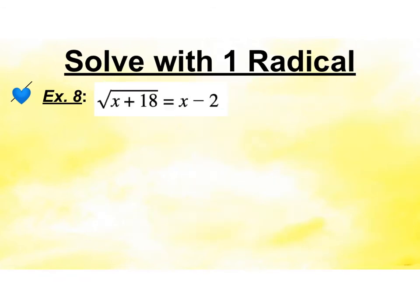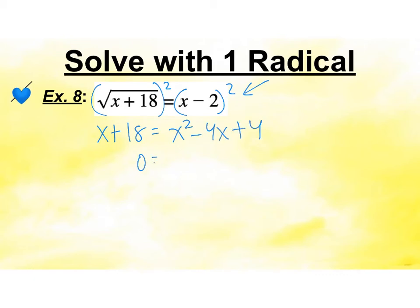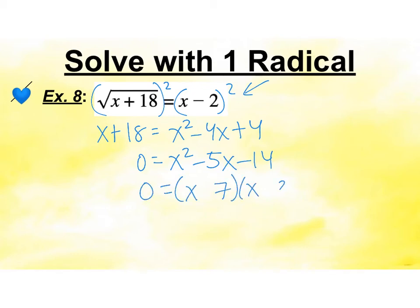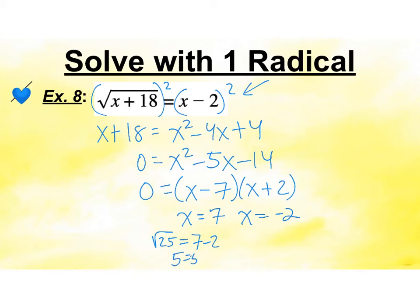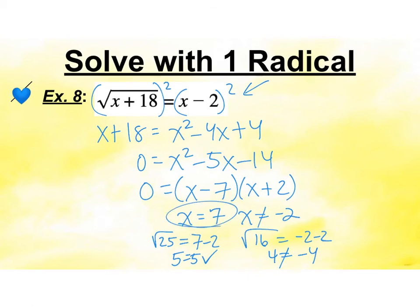Solve with one radical. We're going to square both sides. Remember the right side is a binomial so we have to square it correctly, not just the pieces. So I get x plus 18 equals x squared minus 4x plus 4. Set it to 0 — it is a quadratic. Factor it to (x - 7)(x + 2). So x equals 7, x equals negative 2. Plugging back in: square root of 25 equals 7 minus 2, so 5 equals 5. But plugging in negative 2 gives square root of 16 equals negative 4, which is not true, so reject negative 2. The only answer is x equals 7.